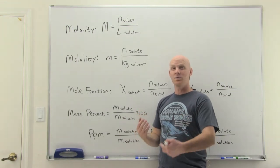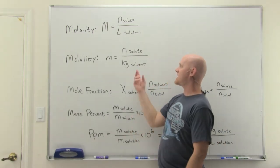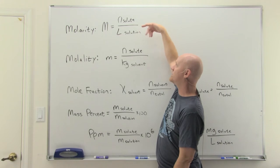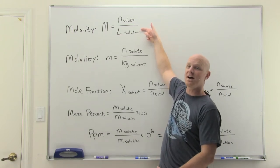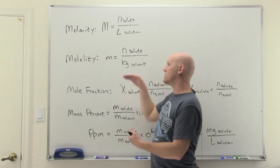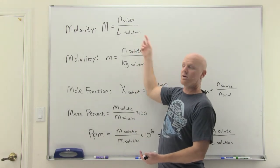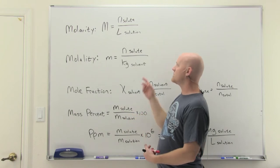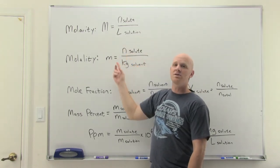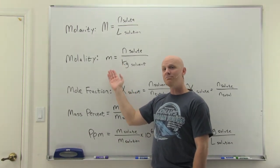For dilute aqueous solutions, molarity and molality are nearly equal because 1 kg of water happens to equal 1 liter. However, as you add more solute, the volume of the solution increases while the kilograms of solvent stays the same, so molarity ends up lower than molality for more concentrated solutions. Molality is important because it's used in calculating colligative properties.